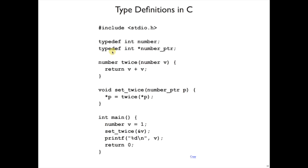We can also define new types that are represented as pointers. So here a number pointer is an integer pointer. So I could change set_twice to instead of saying number star p, I can say number pointer p, which is equivalent to int star p. And since number is equivalent to int, that's equivalent to what we had before.